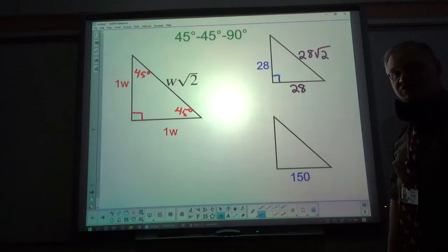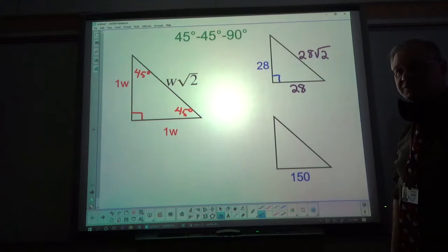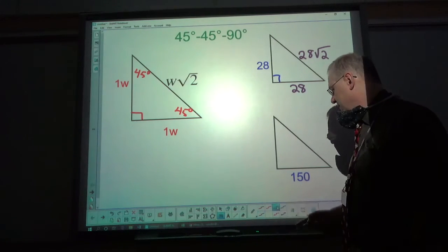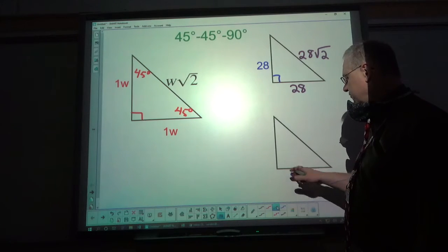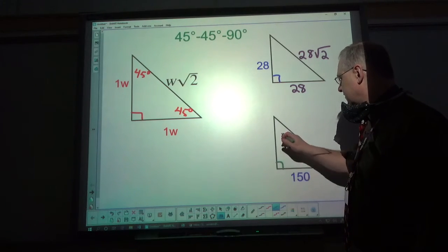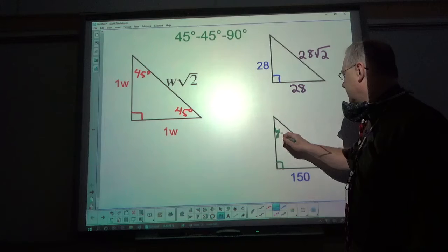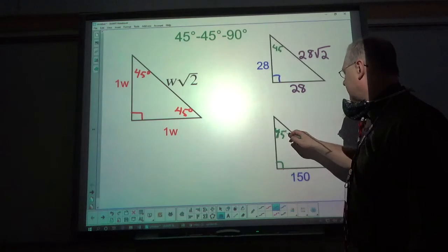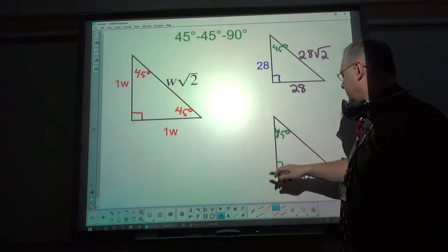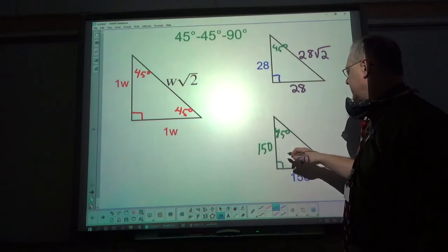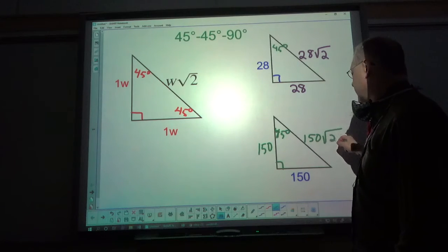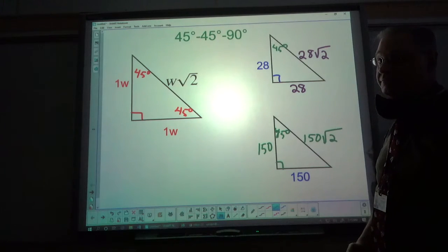Why don't you guys give that one a try, see if you can follow the process. All right, so w is 150. Since there's our 90 and this is 45 degrees, this one also is 150 and this one is 150 square root of two. That's the process.